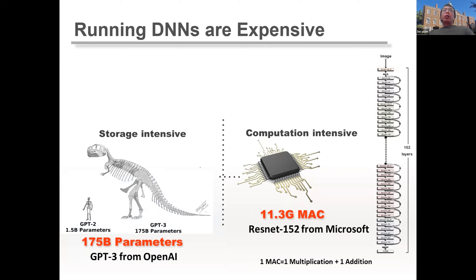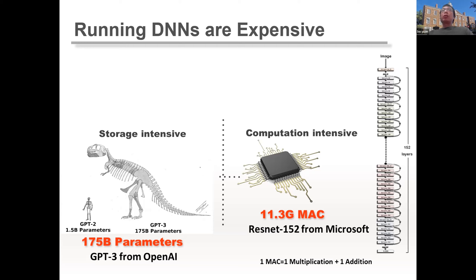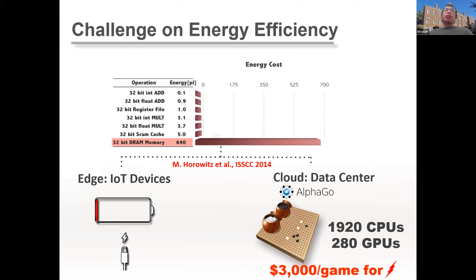Deep learning models used in natural language processing or speech recognition typically have very large model sizes. Computer vision models like convolutional networks are computation-intensive. The trending so-called vision transformers can make deep learning models for computer vision even larger, causing further energy efficiency challenges.